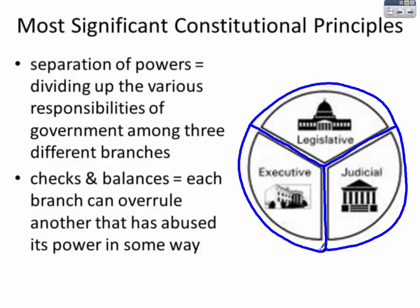Checks and balances, on the other hand, means each branch can overrule another that has abused its power. If the President does something illegal, they can be impeached by the House of Representatives. An action they've taken can be declared unconstitutional by the judicial branch. If the President vetoes a law, that veto can be overridden by Congress. So the physical division is separation of powers; the careful consideration of who gets what power is checks and balances.